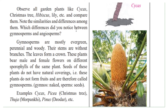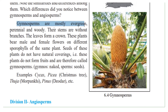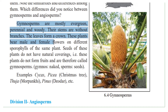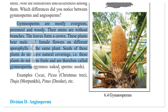Gymnosperms are mostly evergreen, perennial, and woody. Their stems are without branches and the leaves form a crown. These plants bear male and female flowers on different sporophylls of the same plant. Seeds of these plants do not have natural coverings — these plants do not form fruits and are therefore called gymnosperms. Gymnos means naked and sperms means seeds, so they do not have a covering.